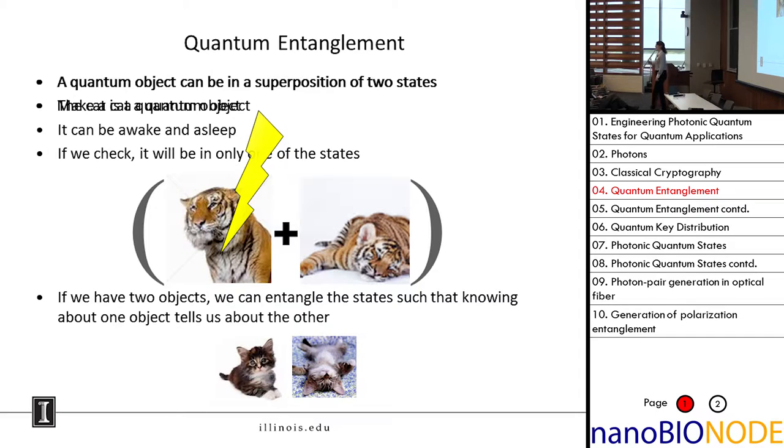Now the cat's a quantum object, which means it can be in two states at once. I'm going to call the first state awake and the second state asleep. The tiger is both awake and asleep. If we measure the state, if we look at what state the tiger is in, it collapses the state to just one of those. That's the idea of measurement in quantum mechanics.